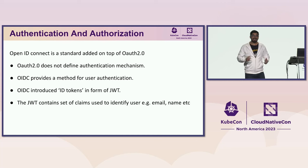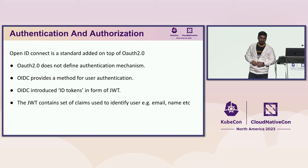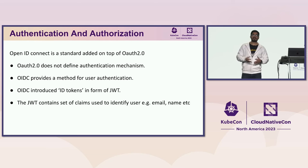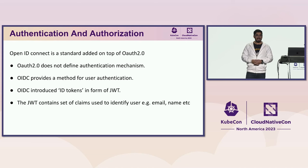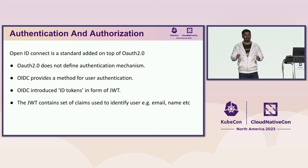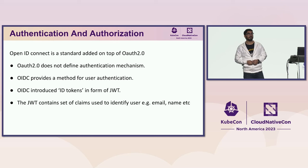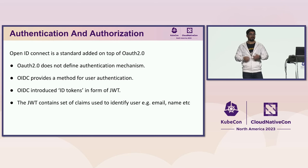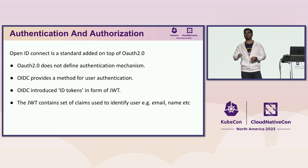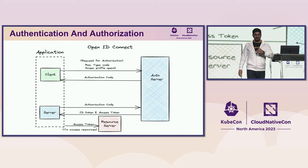Now let's talk about OIDC, which is one of the things we'll cover when we discuss workload identity. OpenID Connect specifies standards to help do authentication. One of the key things OIDC specifies is ID tokens, which should be JWT tokens. These JWT tokens will have claims — for example, email, name — to identify the entity.